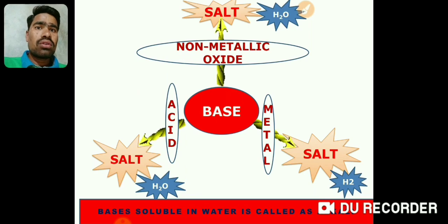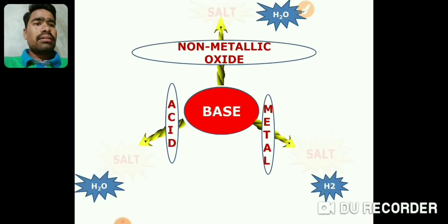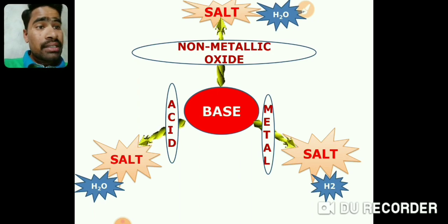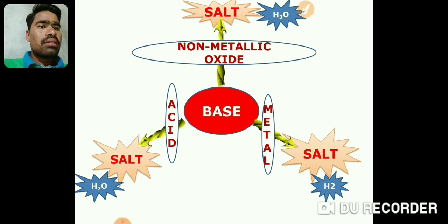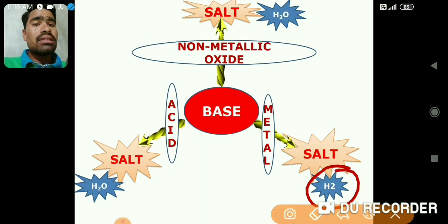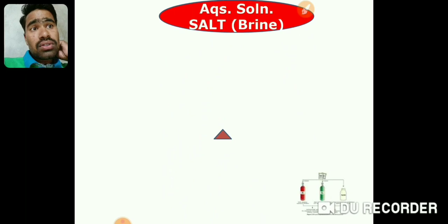So to summarize: when non-metal oxides, acids, or metals react with a base, salt is the common product. Only in the case where base reacts with metal is hydrogen gas formed; in the other two cases water is formed.